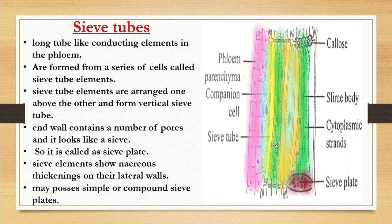Sieve tubes, as shown by the yellow-colored region, are long tubes that conduct the flow of food materials. They are formed from a series of cells called sieve tube elements, arranged one above another in a vertical manner. The end wall contains numerous pores that look like a sieve, so it is called the sieve plate. The sieve element shows nacreous thickening on their lateral walls — a non-lignified cellulosic wall thickening.